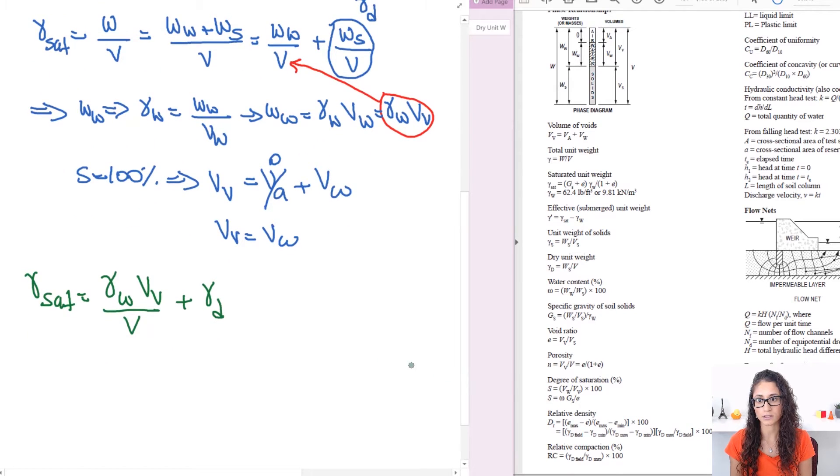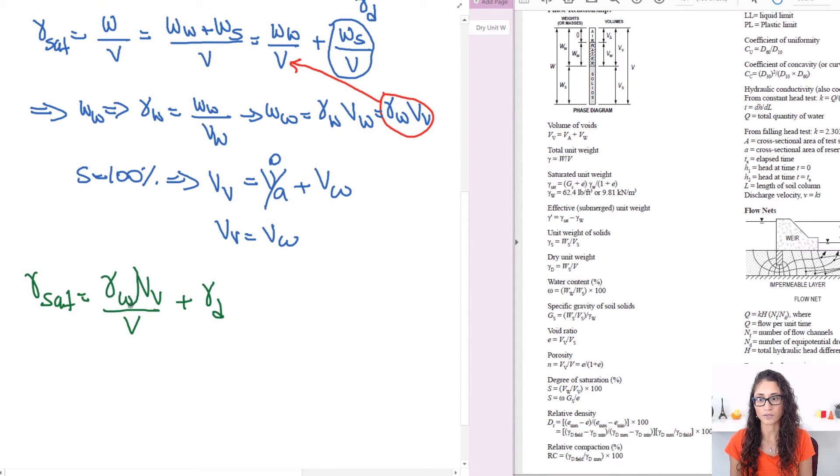So next thing is VV over V is actually equals to porosity N and N was given to us. So if I rewrite this equation we will get N times the unit weight of the water plus the gamma dry. Now let's rewrite this in terms of gamma dry so we can solve for this: gamma saturated minus N times gamma water.